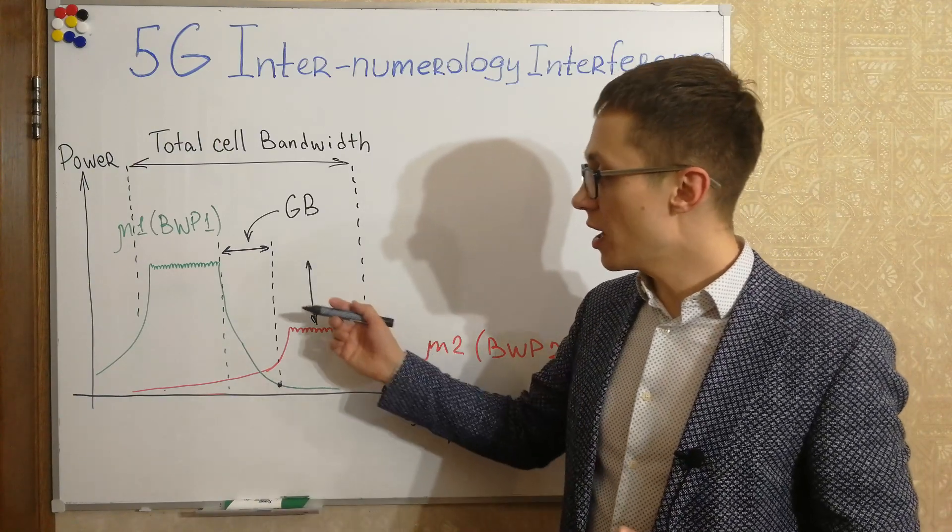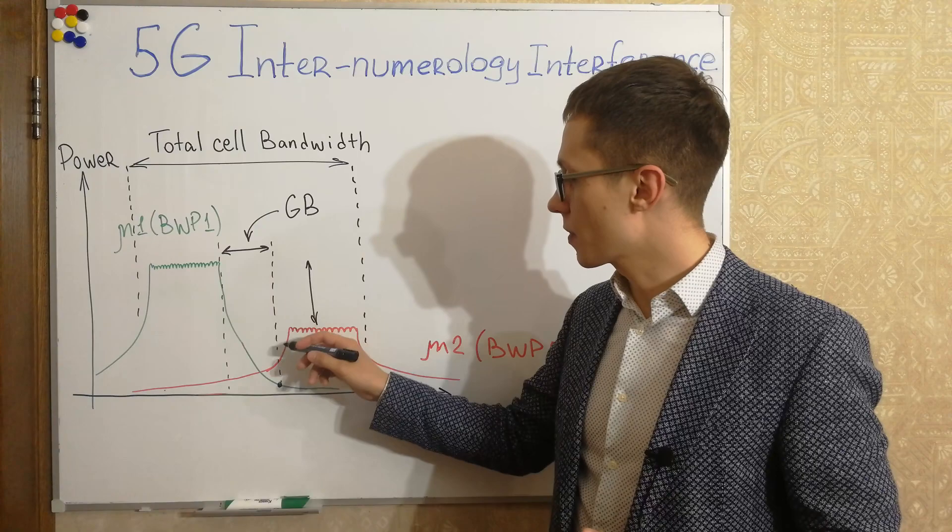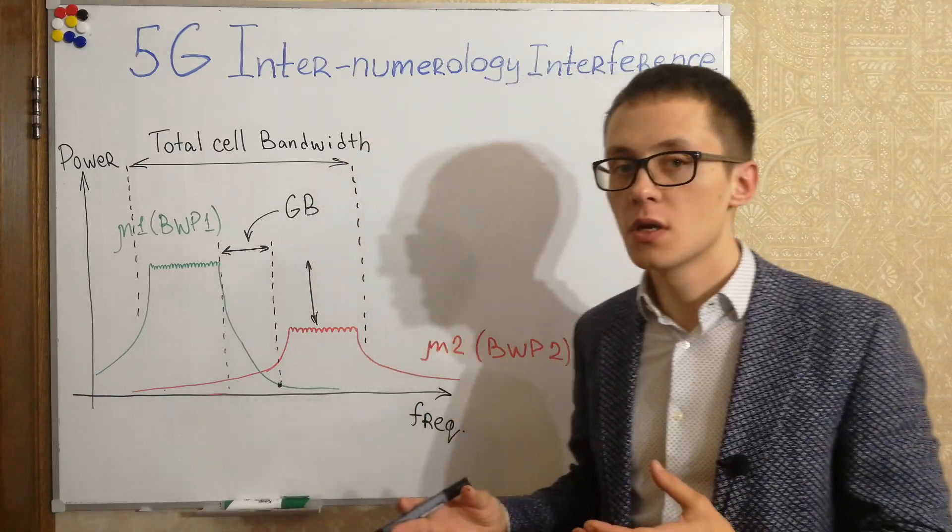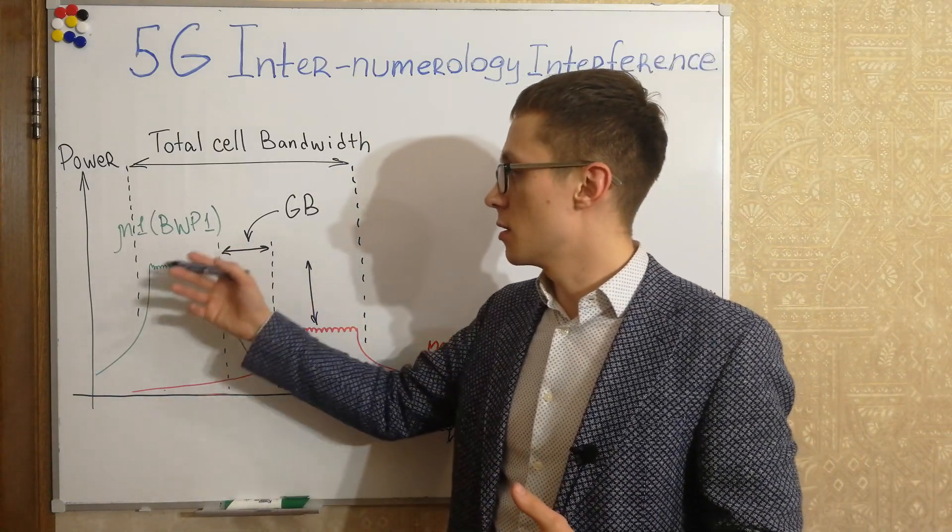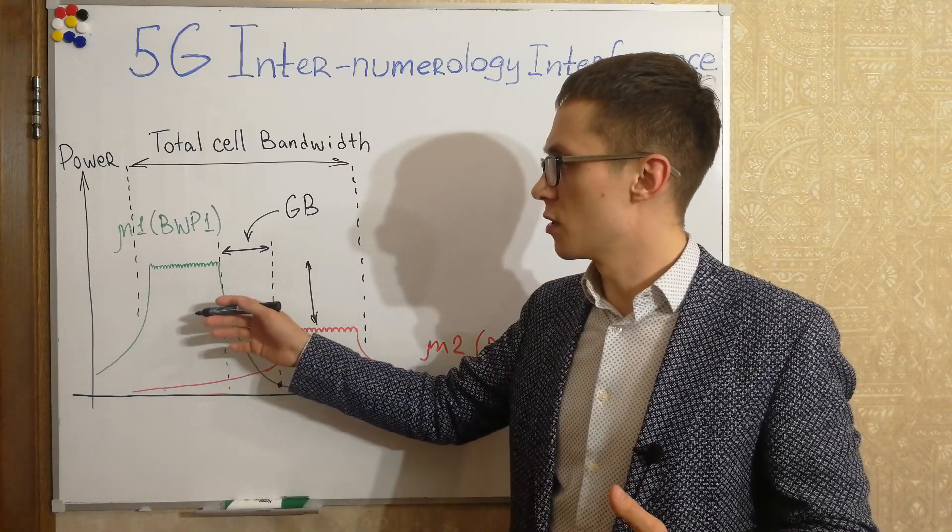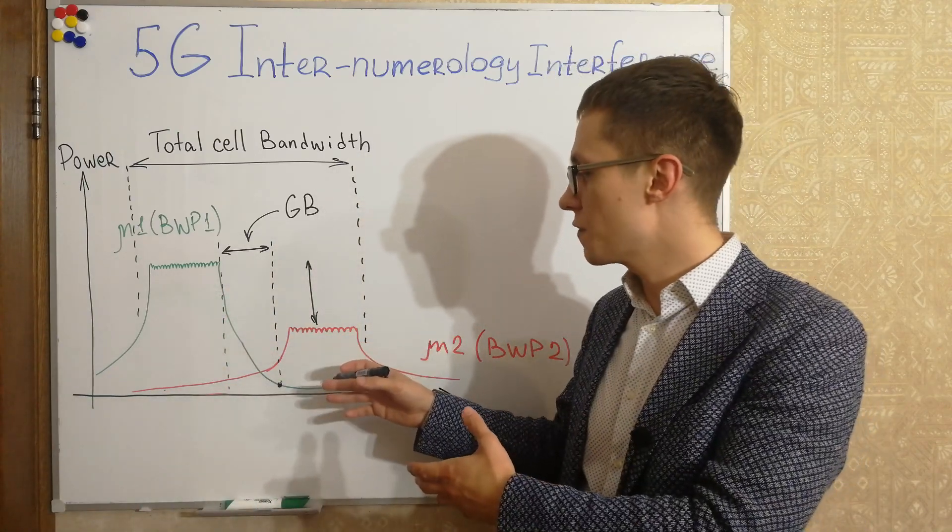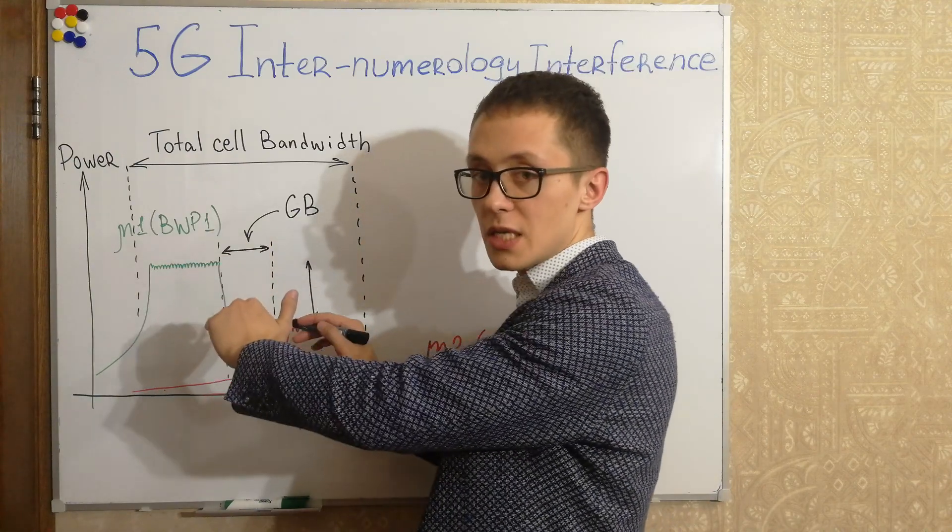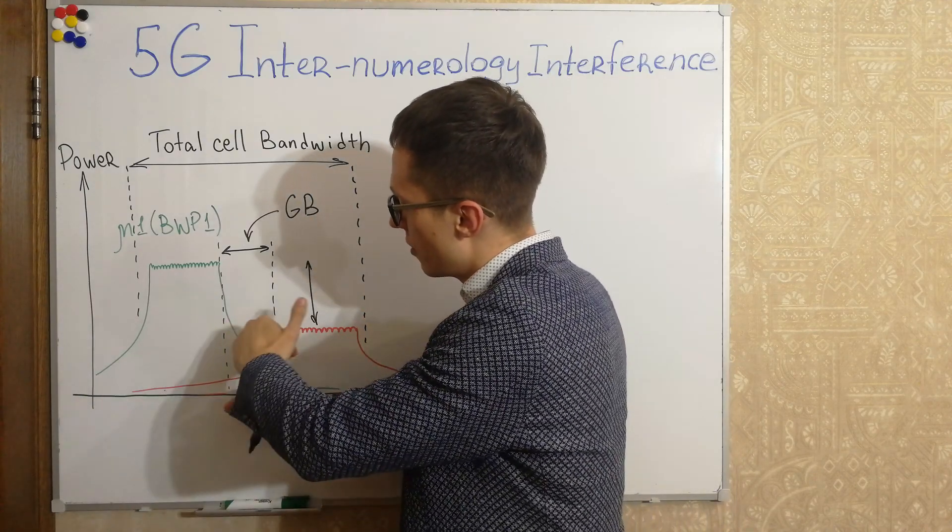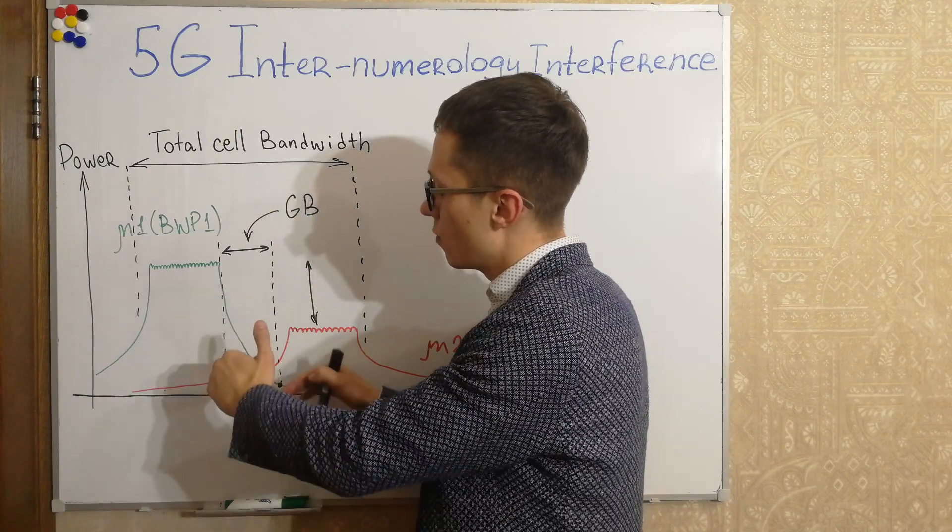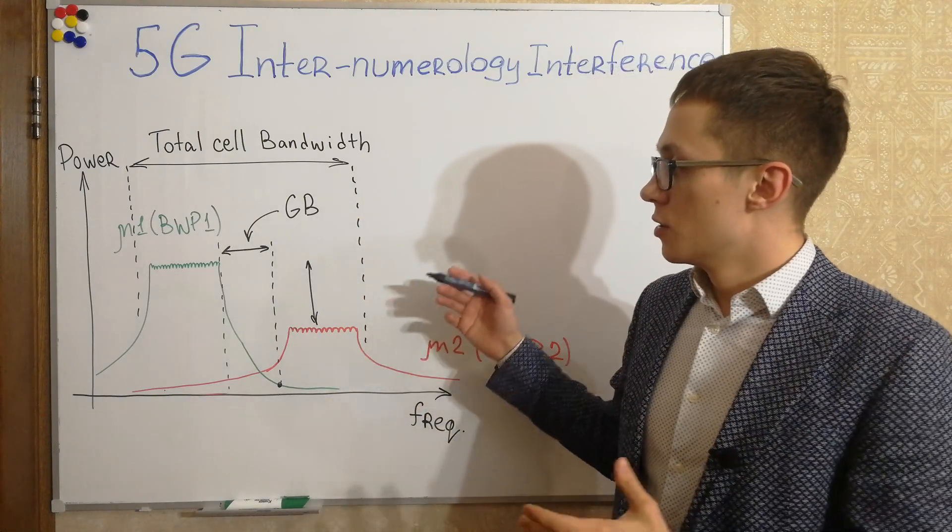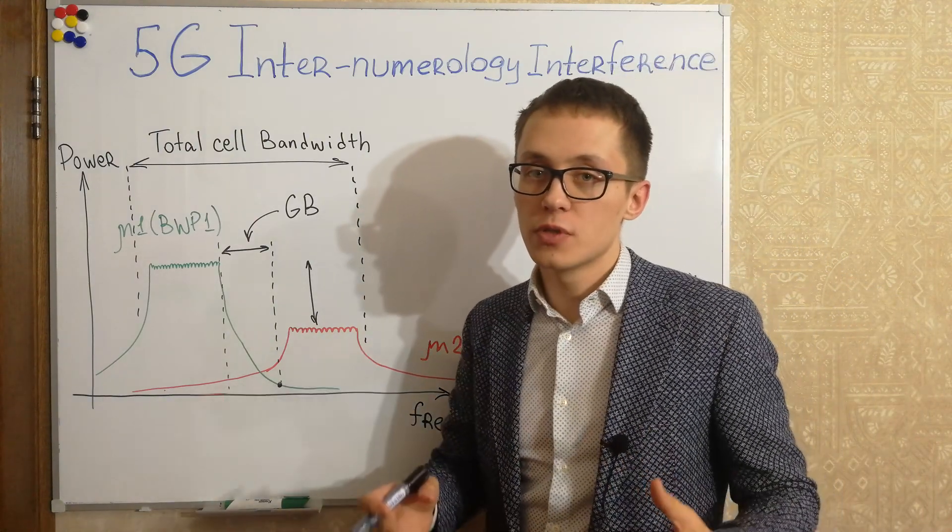Especially like in my example, bandwidth part power can be different in time, can be very randomly different. We don't know exactly because for example this bandwidth part in one time can be used for enhanced mobile broadband, this is for internet of things, and the difference sometimes may be much higher. So it means the interference, the overlapping area would be different as well every time. So it should be taken into account as well.